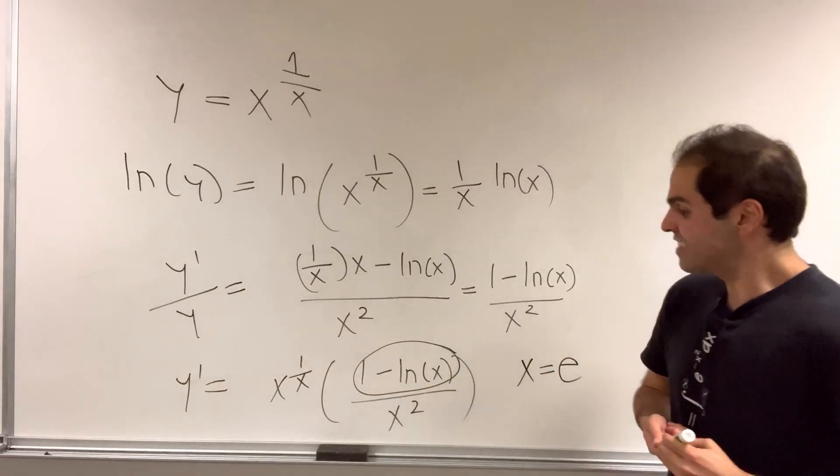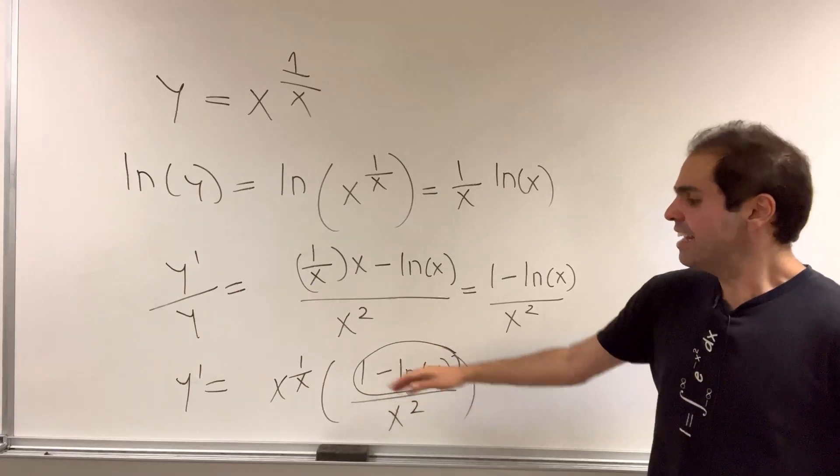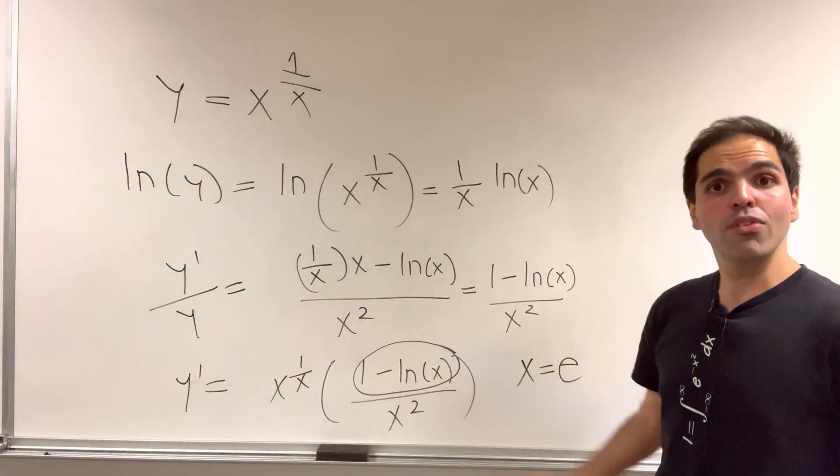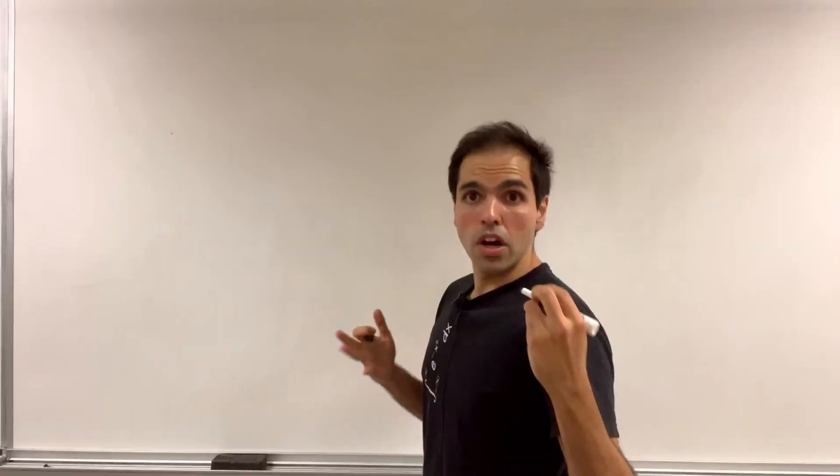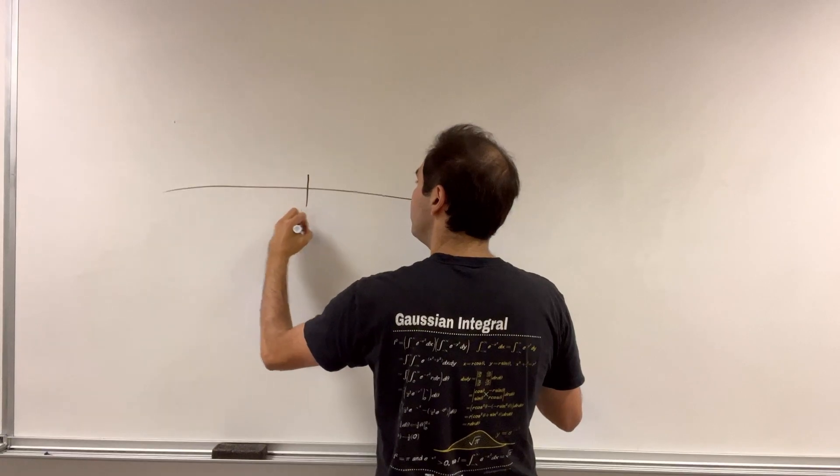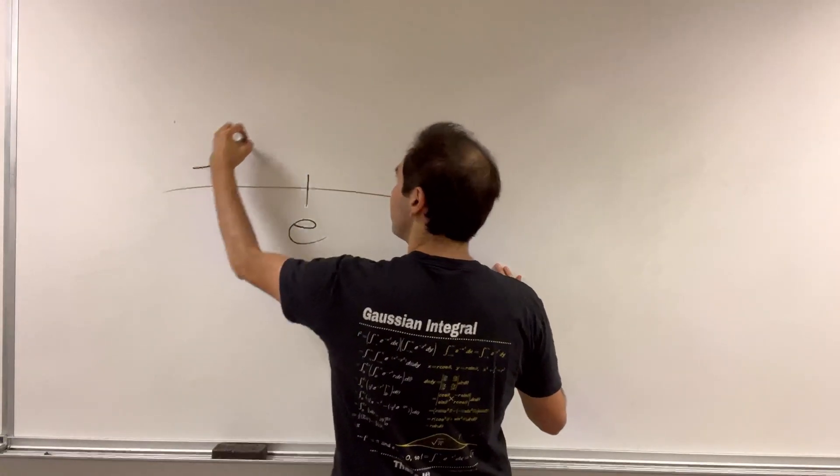If x is less than e, then this becomes positive. And if x is bigger than e, then this becomes negative. So the shape of this near e is simply like that.